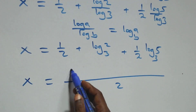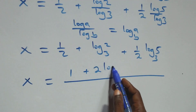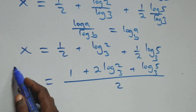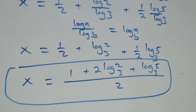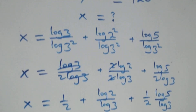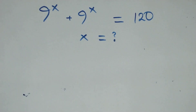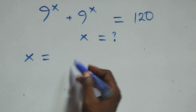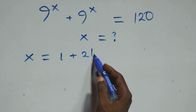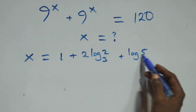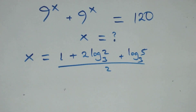Bringing everything together as one fraction over 2, we have x equals 1 plus 2 log₃2 plus log₃5, all over 2. Now let's verify this satisfies the original problem by substituting the value of x: x equals (1 plus 2 log₃2 plus log₃5) all over 2.